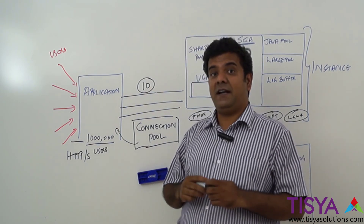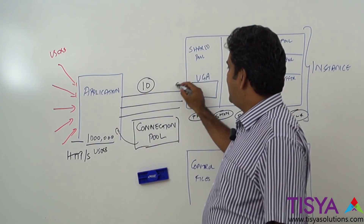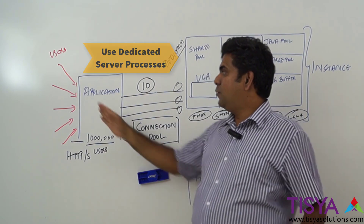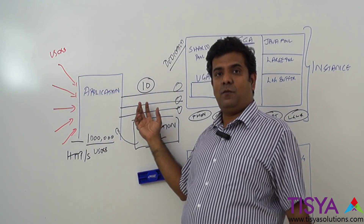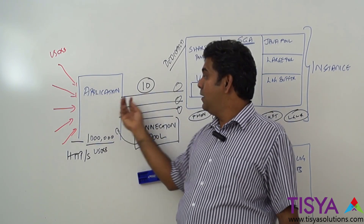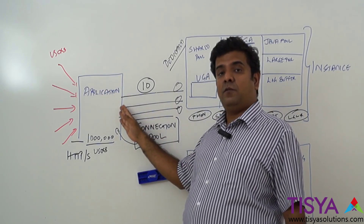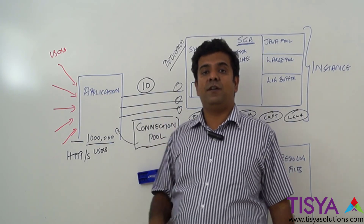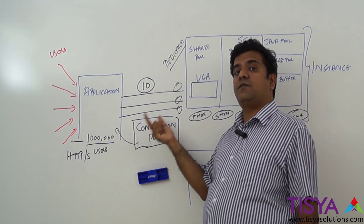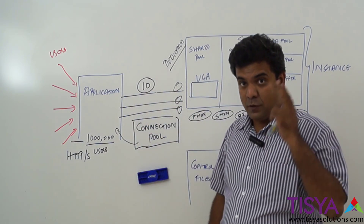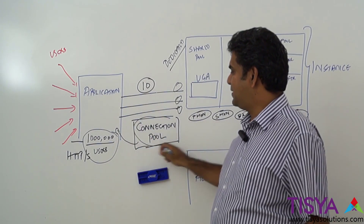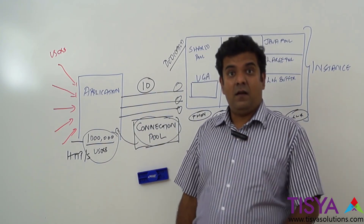When a user makes a request that must go to the database, the application picks one connection from the pool, performs the operation, and returns it back to the pool. This connection pool is maintained by the application, not by the database. It is therefore a good practice to use dedicated mode, because idle time is negated by the pool — all users don't have their own connection; the application picks a connection, uses it, and releases it.